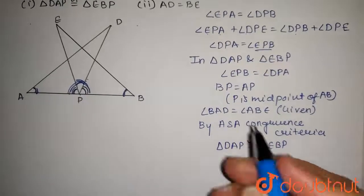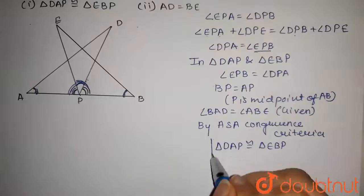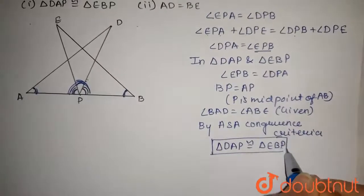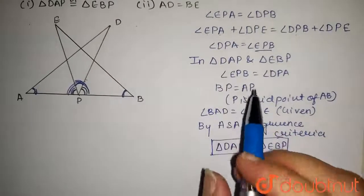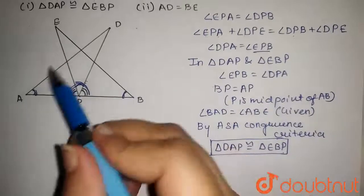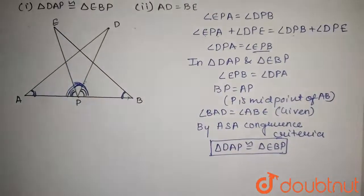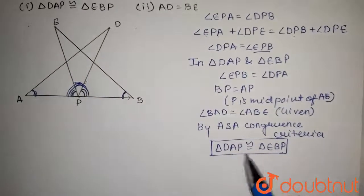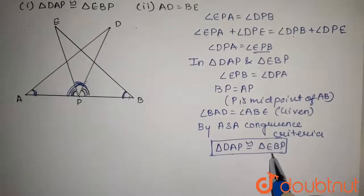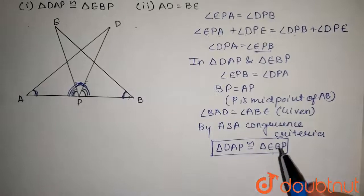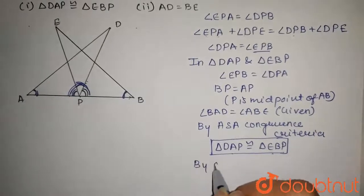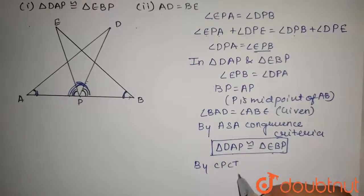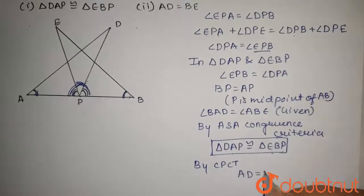Now, we have to prove the second part. AD is equal to BE. To prove this, AD and BE are the corresponding sides of triangle DAP and triangle EBP. And as these two triangles are congruent, by CPCT we can say that AD is equal to BE.